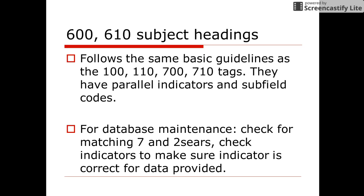The 600 and 610 subject headings follow the same basic guidelines as the 100, 110, 700, and 710 tags. They have parallel indicators and subfield codes. For database maintenance, check for matching 7 and 2 in Sears, and check indicators to make sure the indicator is correct for the data provided.